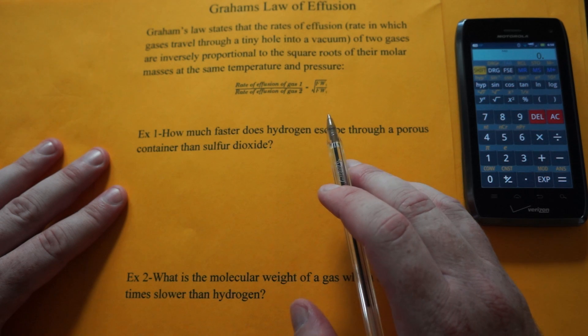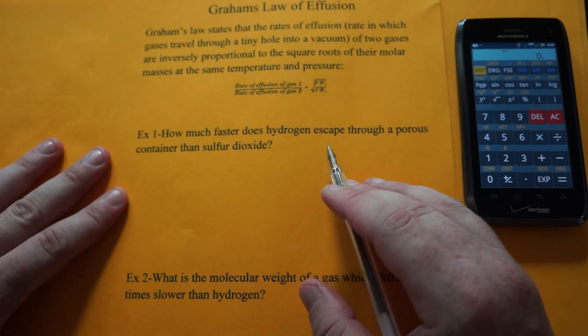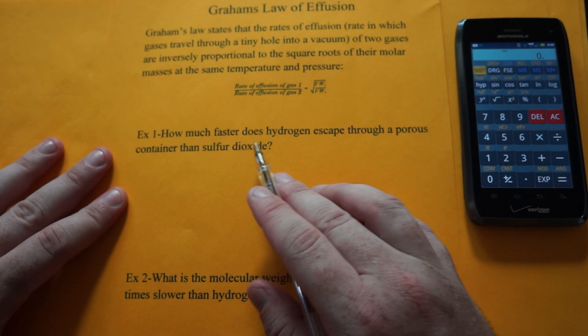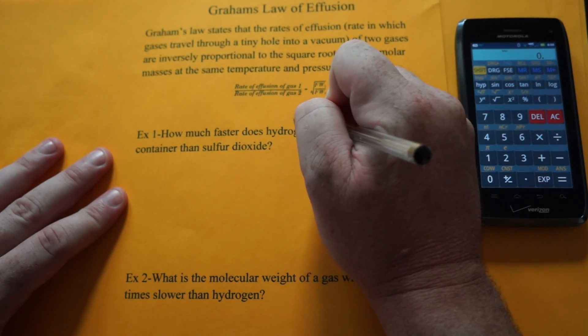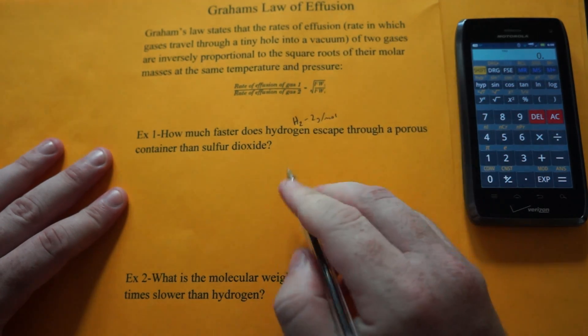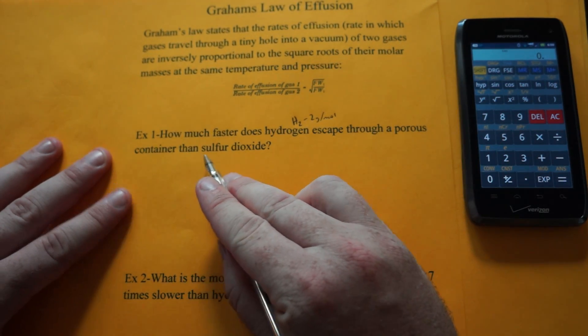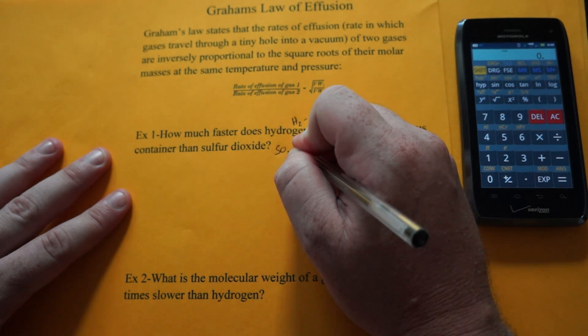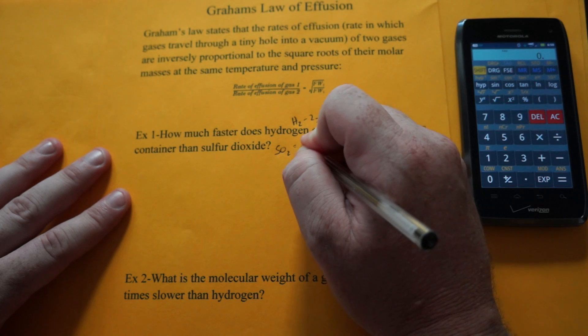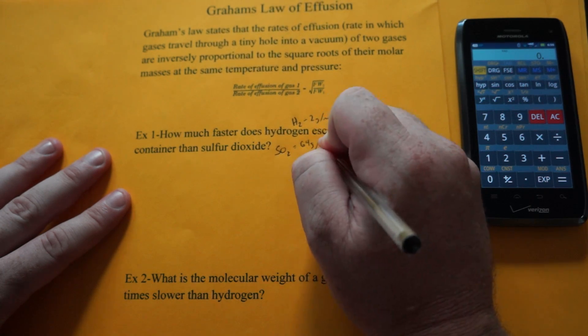Lighter gases travel faster, so they go at a greater rate, and let's do a problem. How much faster does hydrogen? H2 is hydrogen, which weighs two grams per mole. Escape through a porous container, then sulfur dioxide, that's SO2. Sulfur weighs 32, and oxygen weighs 16 each, for a total of 64 grams per mole.